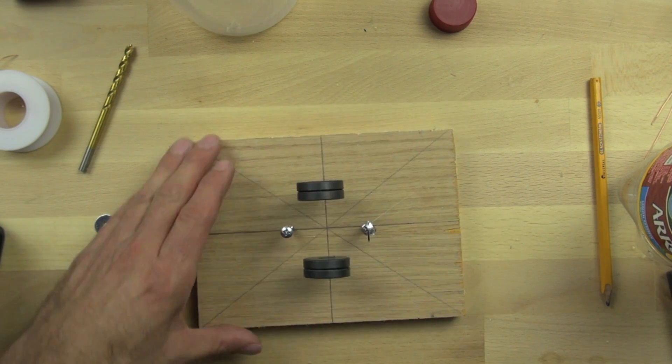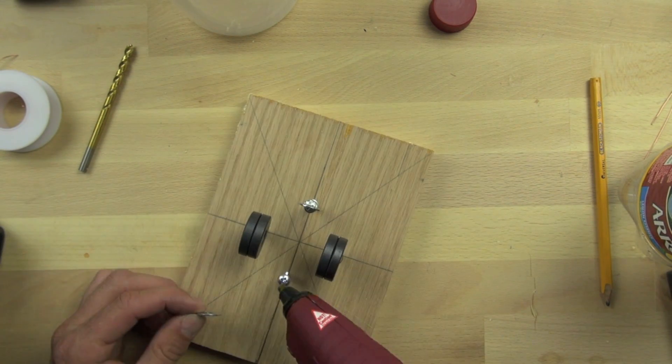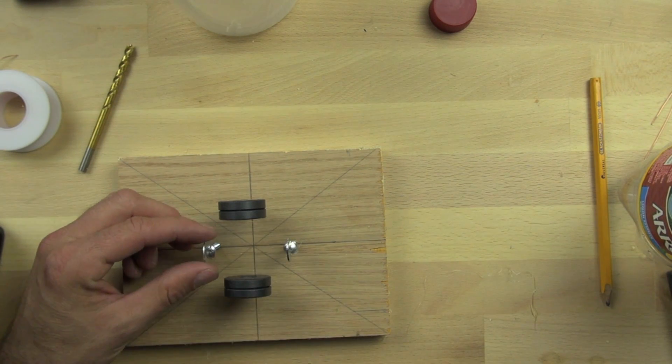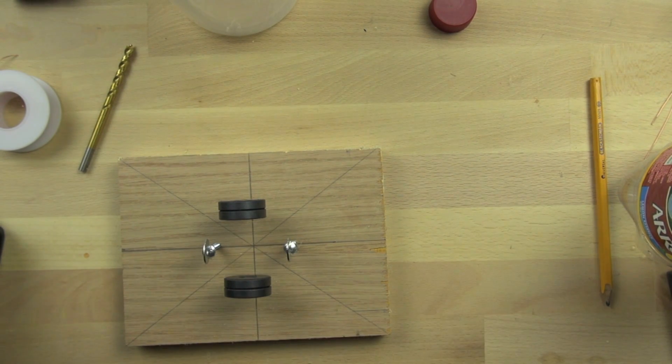So we've got a washer here. And again, we're just hot gluing that washer right in place in a vertical orientation. And the hot glue allows for easy adjustments.